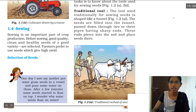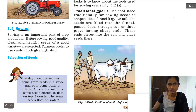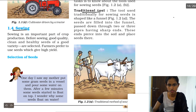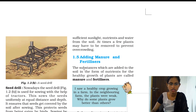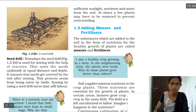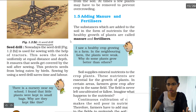In the previous class we learned about the traditional tools used for sowing seeds, where there is a funnel-like thing in which seeds are kept and sown. Today we are going to see the modern method, which is nothing but the seed drill — the machine we use nowadays to sow seeds.